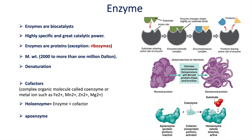So there are three portions: apoenzyme, which is the inactive form of the enzyme; coenzyme, which activates the apoenzyme; and holoenzyme, which is the combination of apoenzyme and cofactors.